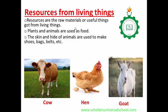We can use plants and animals for food. The hen can be used for food. Meat from goats can be used for food. The cow can be used for food, and it can also produce milk, which can also be used for food. The hen produces eggs, which can be used for food. While the skin and hide of the cow can be used to produce shoes, bags, belts, etc.